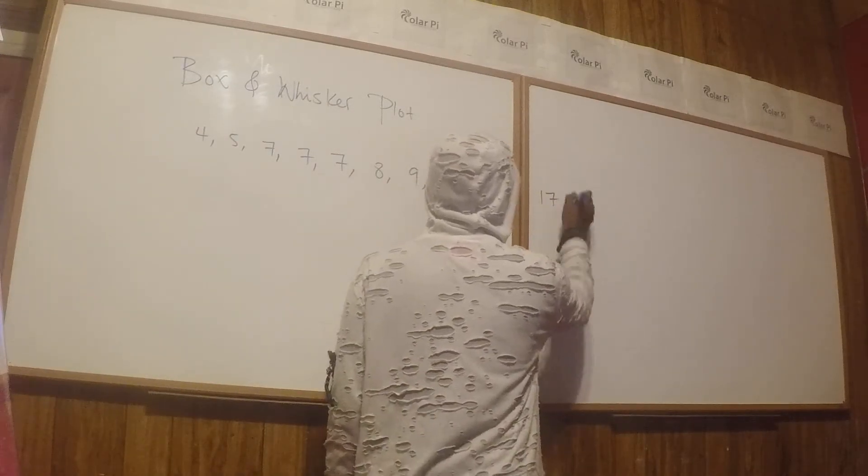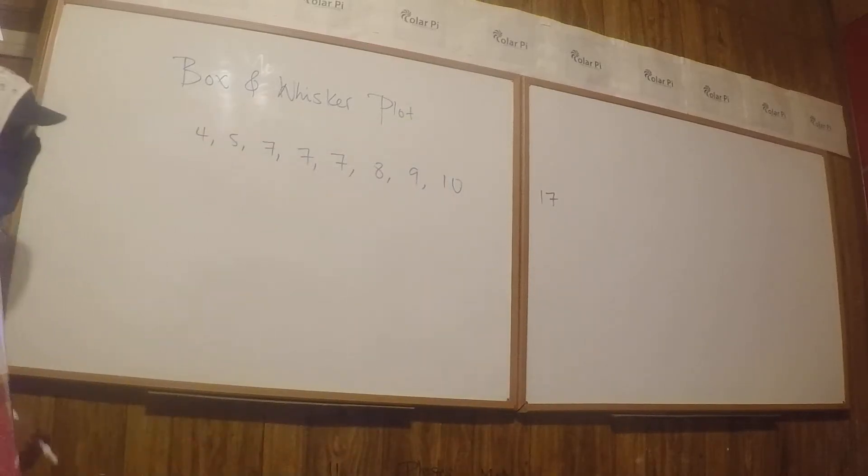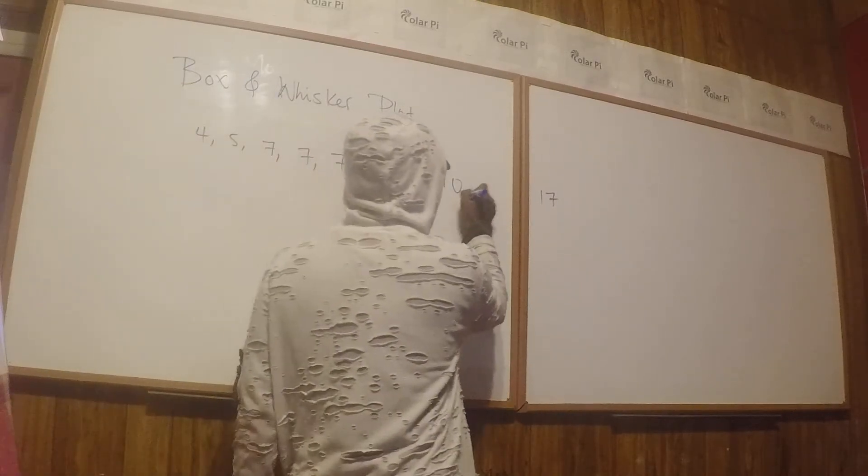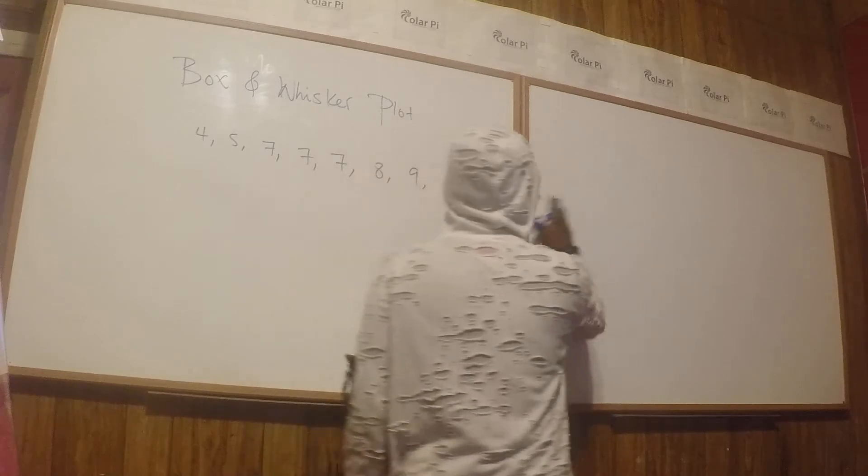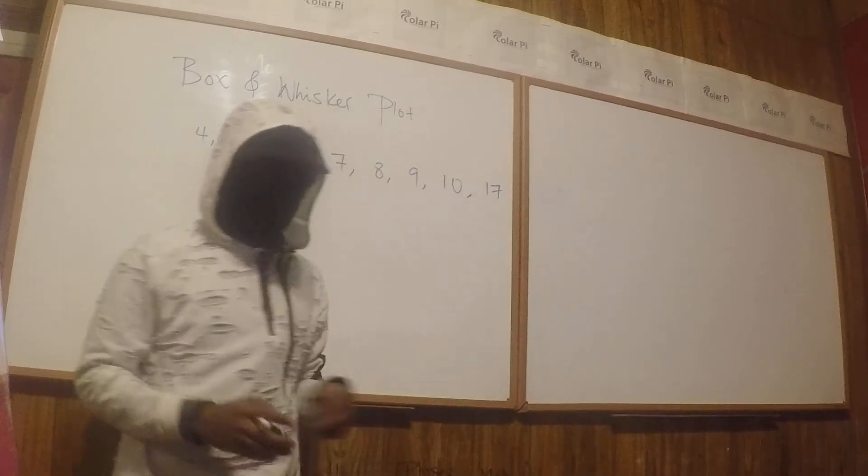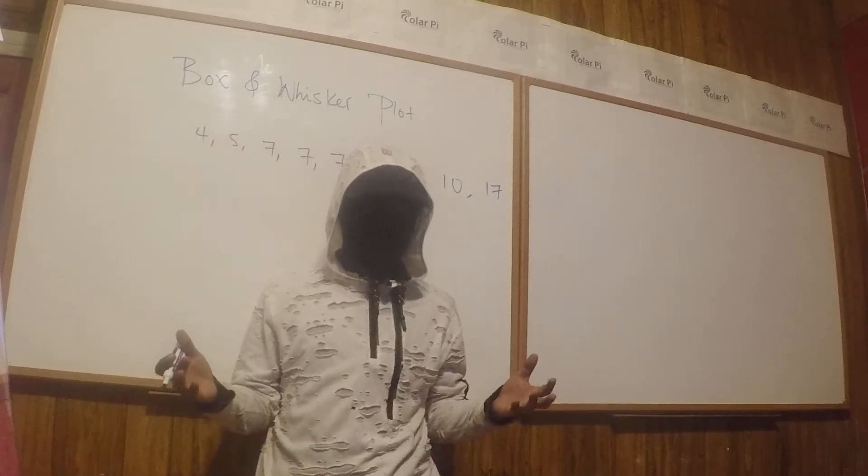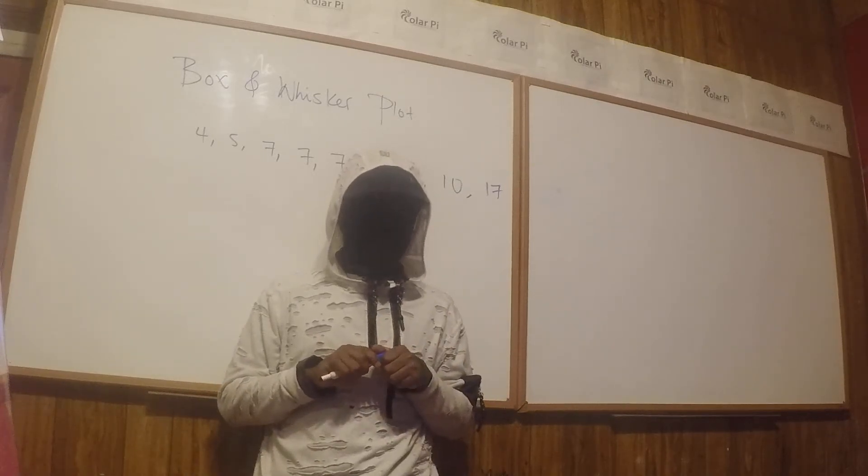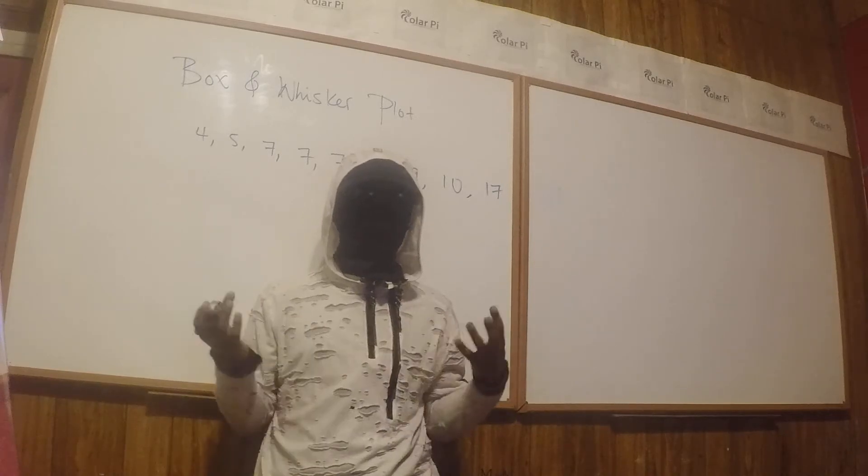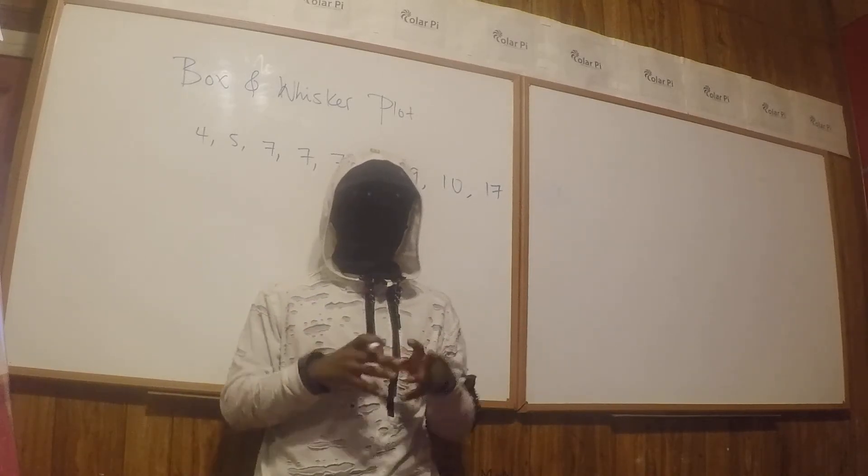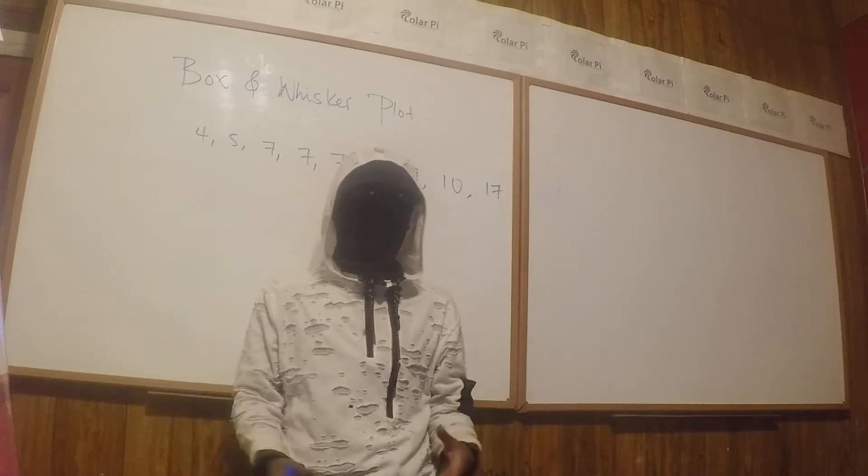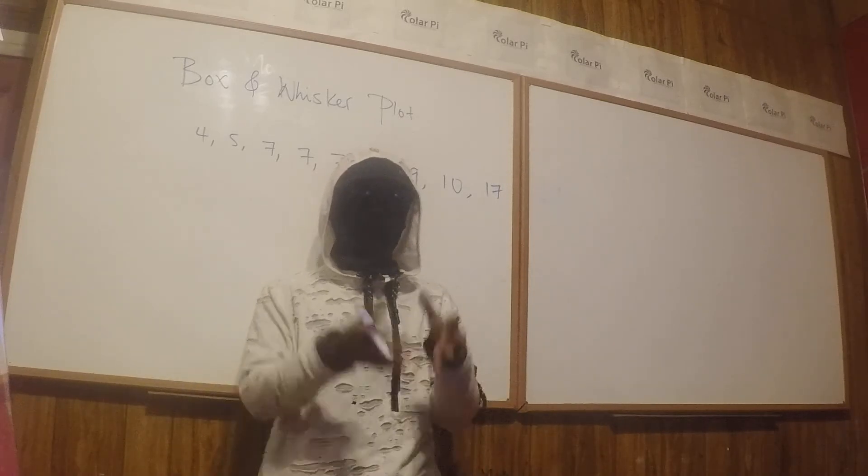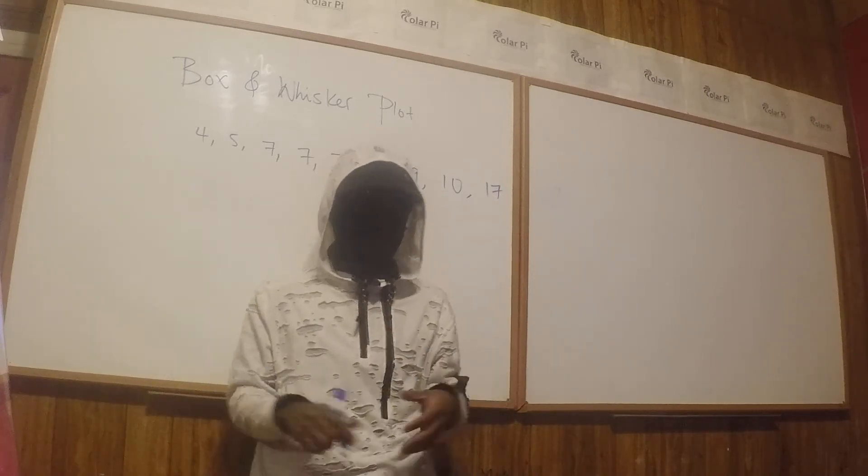You're asked to create a box and whisker plot for this data set. The reason why a box and whisker plot is useful is because it gives you a visual representation of the skewness and other characteristics of the data set.